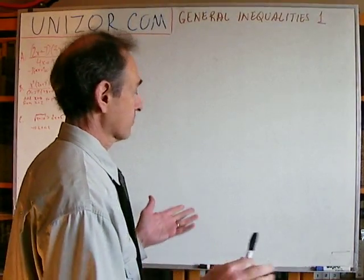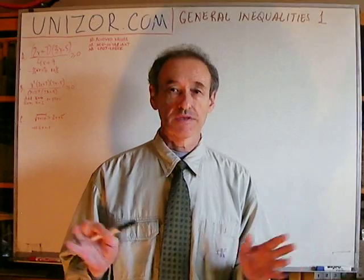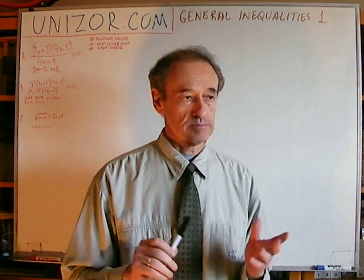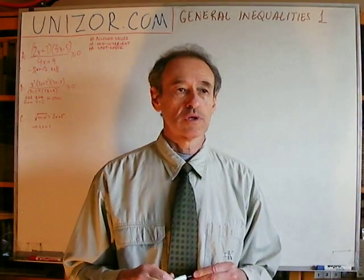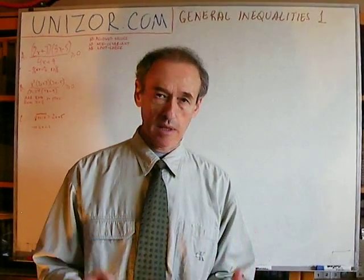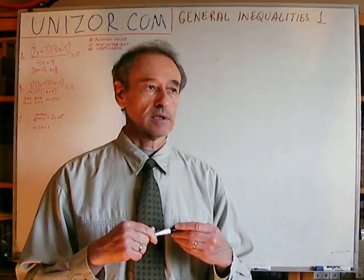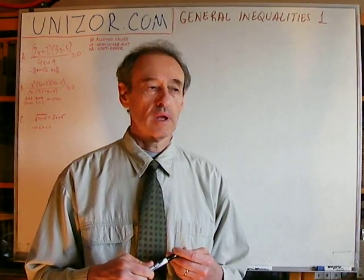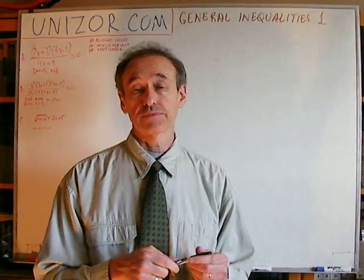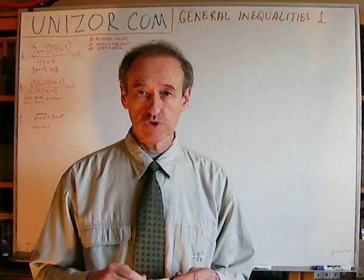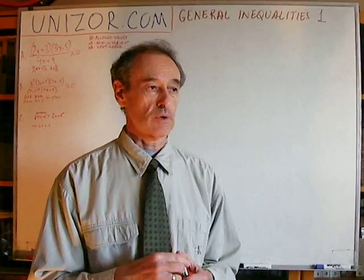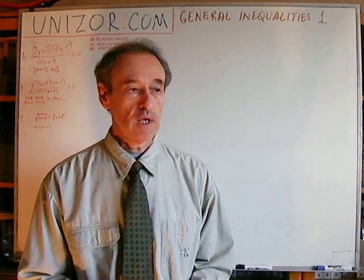There is not too much to talk about in terms of theory on how to solve general inequalities. Just a couple of common sense comments. First of all, you really have to look at the inequality as it is given to you and the restrictions this particular inequality imposes on whatever arguments participate in it. If you have an unknown in the denominator, you have to check the special case when this denominator equals zero, because you cannot divide by zero. So these values must be excluded from whatever solution you receive.